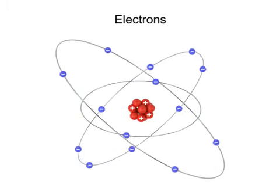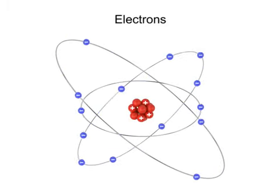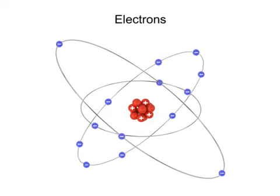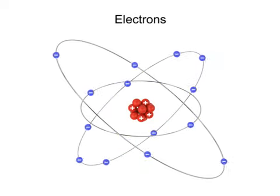Electrons move around a nucleus of an atom in concentric orbits. These orbits or shells represent different energy states that electrons can exhibit.